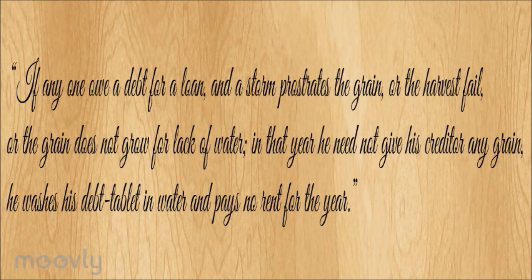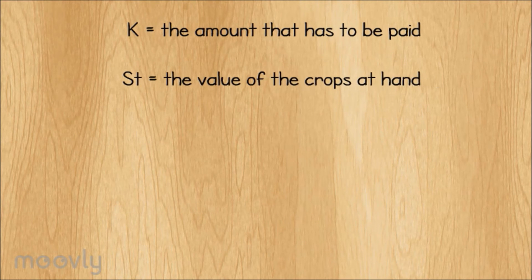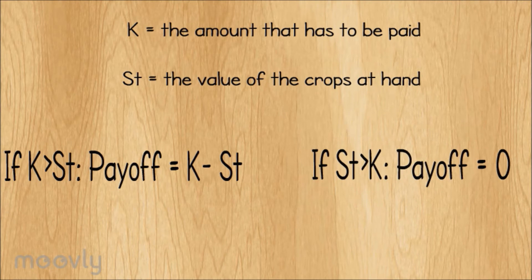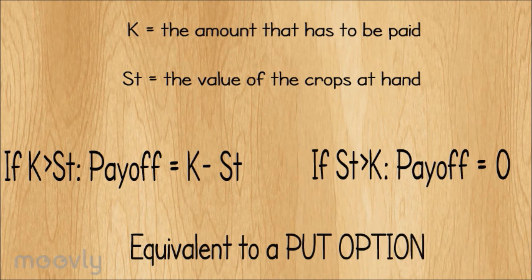This would actually mean in one sentence that, in case of a bad harvest, the interest that has to be paid during that year is excused. If we write that down, taking K as the amount that has to be paid and ST as the value of the crops at disposal at the end of the year, then the rule can be put this way. If the value that has to be paid is higher than what the farmer has, then the difference which is K minus ST doesn't have to be paid, which can be considered as the payoff in that case. On the other hand, if ST is strictly higher than K, then the entire value is paid and the payoff is zero, which means that the whole situation translates into a standard put option.